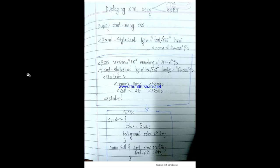One approach is CSS — Cascading Style Sheets. The other is XSLT — Extensible Style Sheet Language Transformation. Using XSLT, we can display the XML. We are also looking at how you can use CSS to display XML.